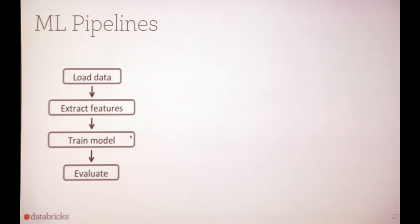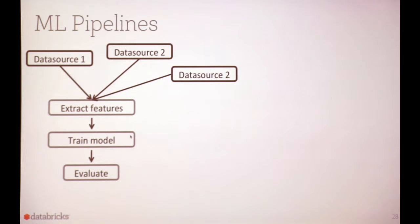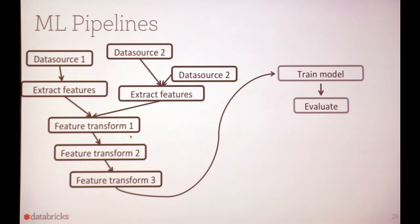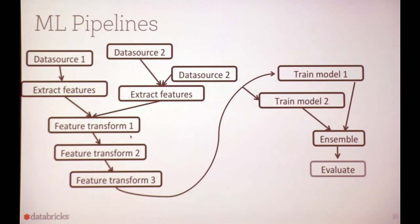The next element is ML pipelines. The idea is to think about what an ML workflow might look like: at a high level, you load data, get features, train a model, evaluate it. But in practice it can be much more complex — you might have many different data sources, many steps, training multiple models and ensembling them before evaluating. ML pipelines are trying to simplify the API and workflow for users who have complex tasks.